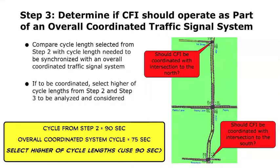First, Step 3: Determine if the CFI should operate as part of an overall coordinated traffic signal system. This is important because if I use 90 seconds before, but I need to coordinate with signals not too far upstream and downstream that have a longer cycle length, it's going to impact the geometry for my CFI traffic signal. One needs to compare the cycle length selected from Step 2 with the cycle length needed to be synchronized with an overall coordinated traffic signal system.